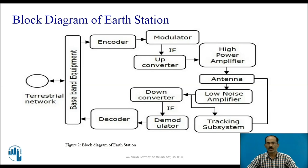The block diagram of the Earth Station mainly consists of a transmitter, receiver, antenna system, and tracking subsystem. On the transmitter side, the blocks include the encoder, modulator, up-converter, and high power amplifier. The receiver is the reverse process of the transmitter. There is an antenna system which transmits and receives electromagnetic waves, a tracking system which alters the antenna position based on the satellite's position, and baseband equipment connected to a terrestrial network.